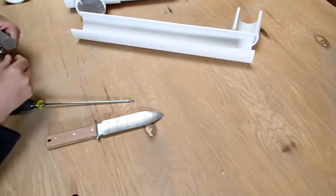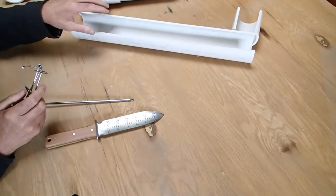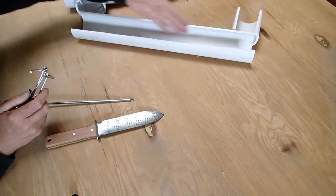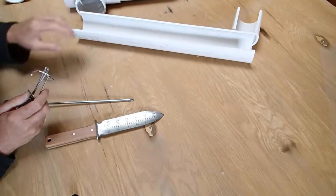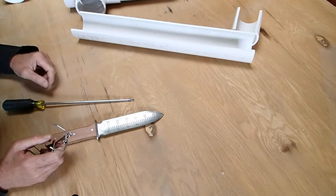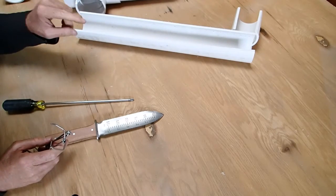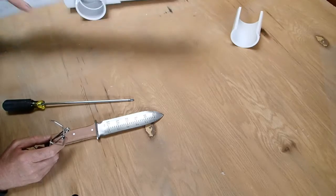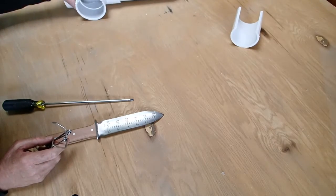This problem with trap placement arises though because gopher tunnels aren't long straight runs like this PVC pipe is. Gopher tunnels have twists and turns around rocks or other obstacles, and most importantly gopher tunnels have a lot of intersections, more than you think.